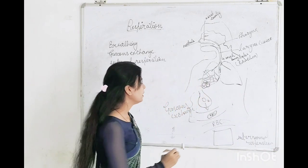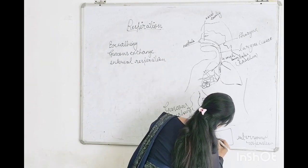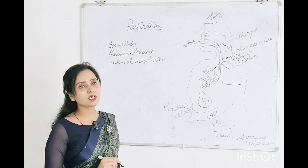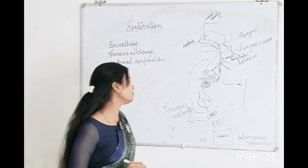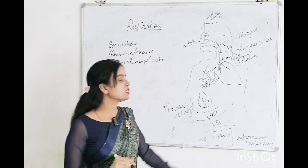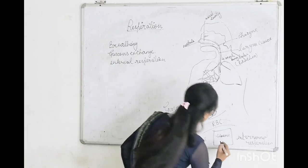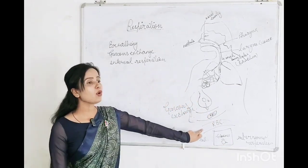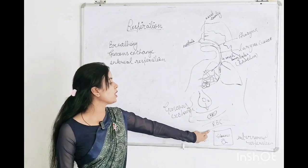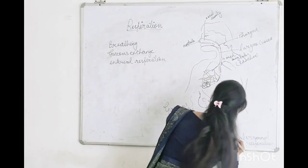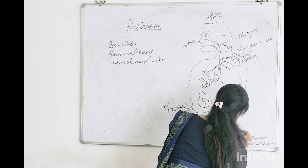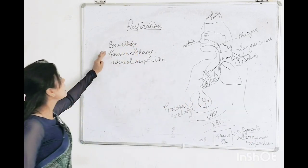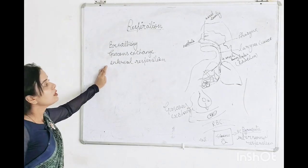What happens in the cell? In the cell, glucose is present, coming from the digestive system. Glucose plus oxygen — in the presence of oxygen, glucose breaks down into 3-carbon pyruvate. So we have discussed the three stages: first is breathing, second is gaseous exchange, and third is internal respiration.